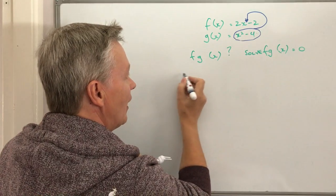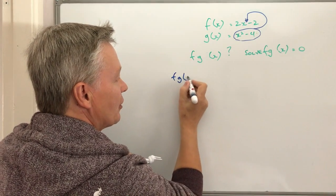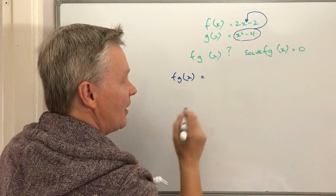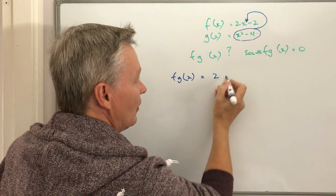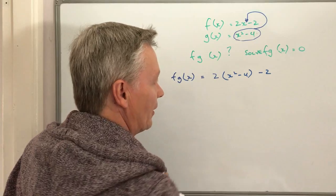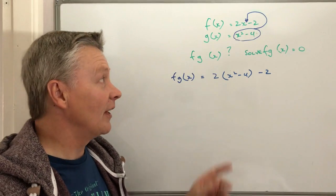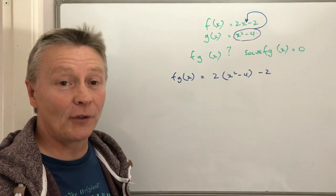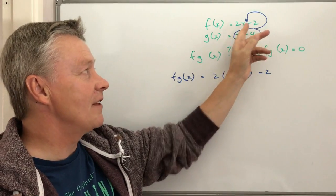So what we end up with is the composite function fg of x is the same as saying 2 times (x squared minus 4) minus 2. Okay, so all I've done there is I've taken that x squared minus 4 and plugged it into this function here.